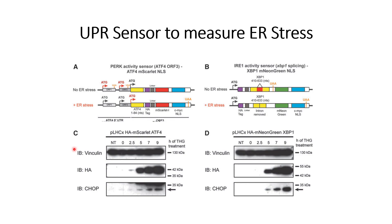The paper describes two sensors that can detect ER stress. One sensor is based on ATF4 changes that occur in the cells, and the other is based on the removal of an intron in XBP1. Let us start with the ATF4 sensor.